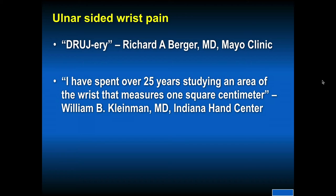Dr. William Kleinman, Indiana Hand Center, is quoted as saying, 'I've spent over 25 years studying an area of the wrist that measures one square centimeter.' As clinicians taking care of active sports-related injuries, we need to make the diagnosis of what is going on with ulnar-sided wrist pain. However, surgery is not as successful as an early diagnosis of radial-sided wrist pain for a scaphoid fracture or scapholunate dissociation. The ulnar-sided wrist pain in that small area is harder to treat surgically, but we must strive to make a diagnosis acutely.